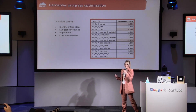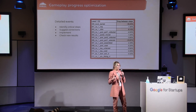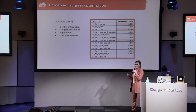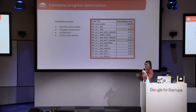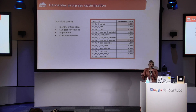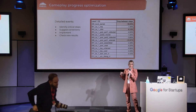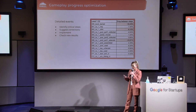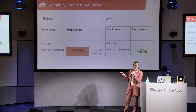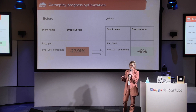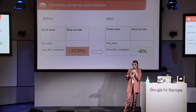We identify critical steps — for example, some item was hidden too much, or it was too small, or players couldn't break the code, meaning the clue wasn't clear enough. We suggest a correction, implement it, and then check new results to see if there are any improvements. In this particular example, we were losing 60% of users on level start during the intro dialogue, so we decided to shorten it. Also, that level had many tutorials explaining different game mechanics, so we cut some parts and moved them to another level. Before, the dropout rate in the first level was 28%, and after implementing all those changes, it decreased to only 6%.